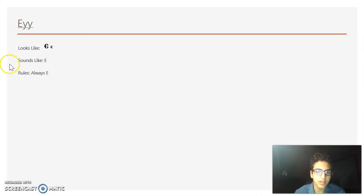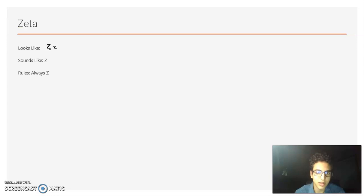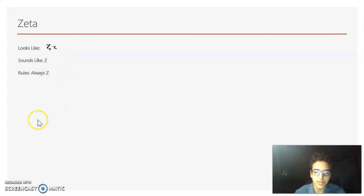Then we have the next letter, which looks kind of like an E, and it always sounds like E. Next, we have Zeta — it looks kind of like a Z, and it always sounds like a Z.